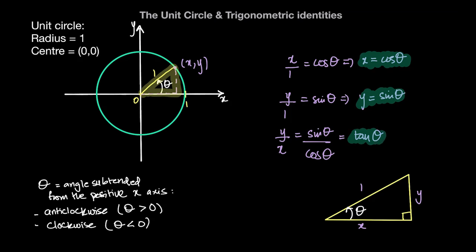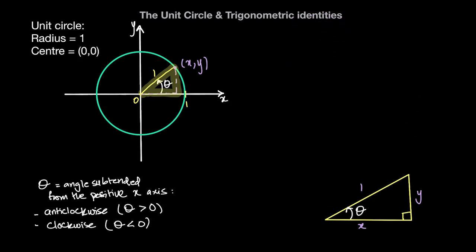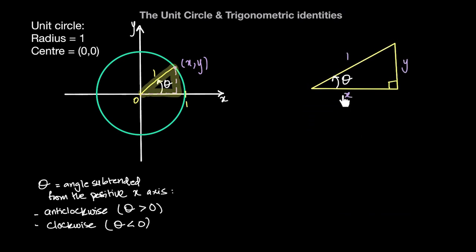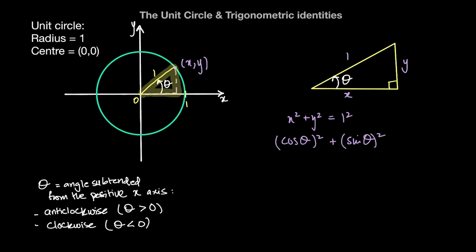Another thing we notice is that, looking at this triangle and using Pythagoras's theorem, we can say that x² + y² = 1². Since x is cosine of theta and y is sine of theta — because the side adjacent to theta divided by 1 equals cosine of theta — we can write cosine²(θ) + sine²(θ) = 1.